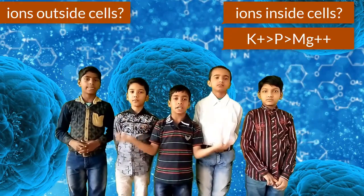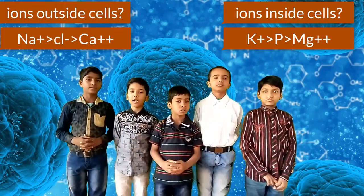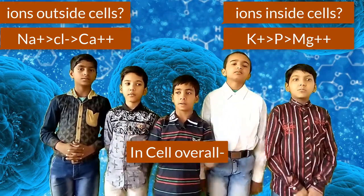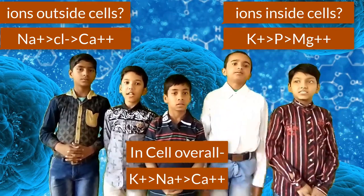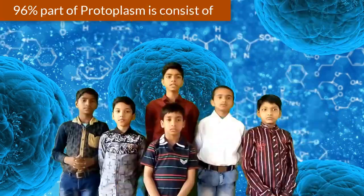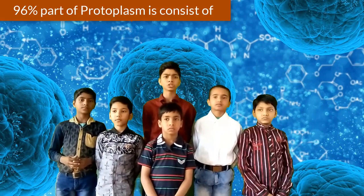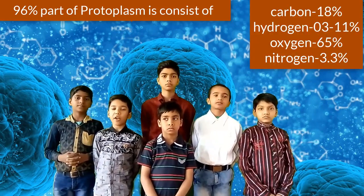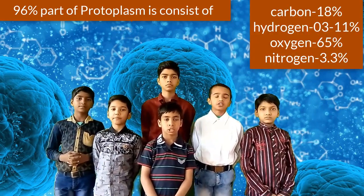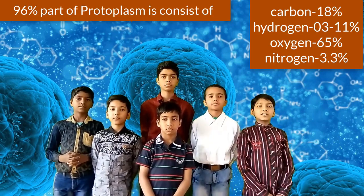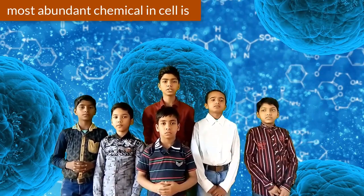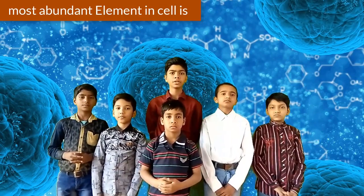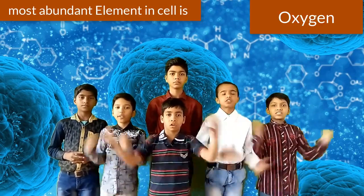Ions outside cells include sodium, chlorine, and calcium. Overall ions in the cell include potassium, sodium, and calcium. 96% of protoplasm consists of carbon (19%), hydrogen (3–9%), oxygen (65%), and nitrogen (3.3%). The most abundant chemical in the cell is water, and the most abundant element in the cell is oxygen.